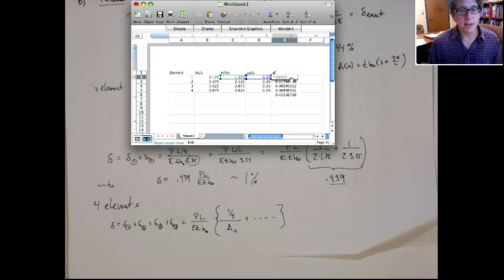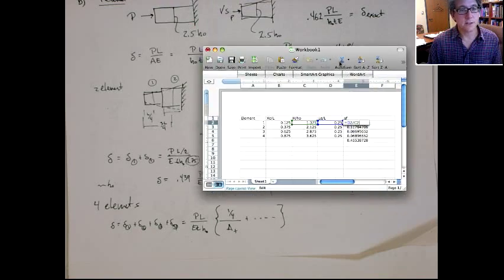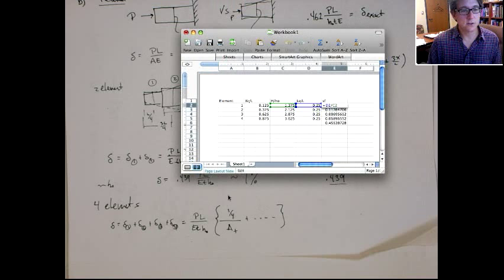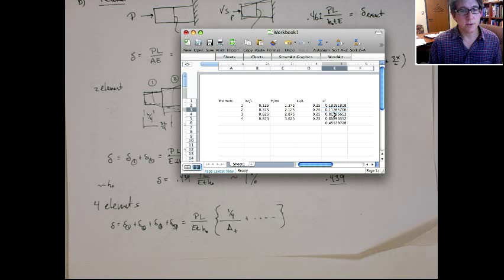And this is just going to be that term that goes in the sum. This is just the term that goes here for each one of these elements. So it's basically the length factor over the height factor. And this is for the first element, the second element, the third element, and the fourth element.